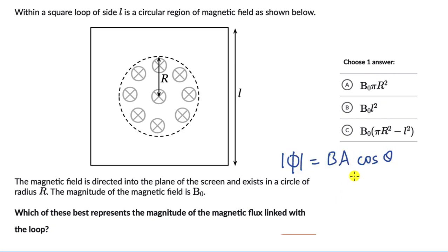BA cos θ, right? And θ over here could either be zero degrees or 180 degrees. It doesn't matter because if you're taking magnitude it really just becomes BA. So we need to figure out what is A. B is B0.